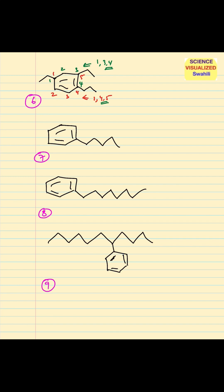You always want to use the lowest number possible. The best way to label them will be to start from here — that will be position one, two, and then three and four. So if you use the blue, it will be one, two, and four. That gives you the lowest numbers for the substituents.